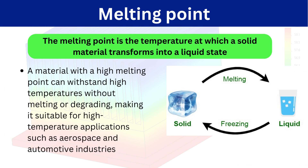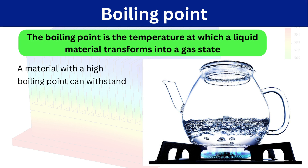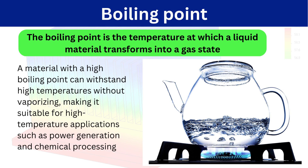Next we have the melting point, which is the temperature at which the solid state of a material is transformed into the liquid state. Next we have the boiling point, which is the temperature at which the liquid state of a material is transformed into the gas state. The material with a high boiling point can withstand high temperature without vaporizing.